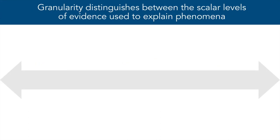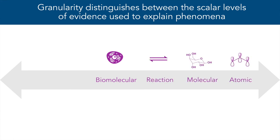The concept of granularity helps us distinguish between the scalar levels of evidence being used to explain different types of phenomena. For example, biologists often focus on cellular and organismal evidence for phenomena, while chemists often focus on evidence at the molecular and atomic levels.